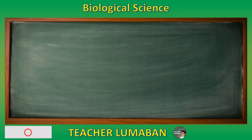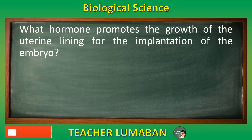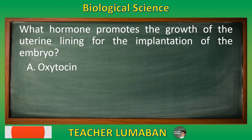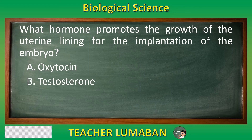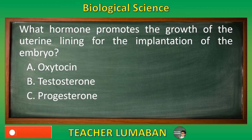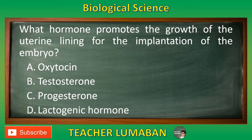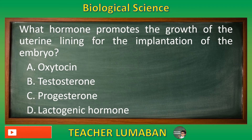What hormone promotes the growth of the uterine lining for the implantation of the embryo? Letter A: Oxytocin. Letter B: Testosterone. Letter C: Progesterone. Letter D: Lactogenic hormone.